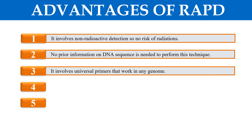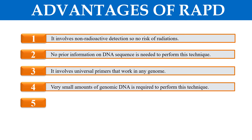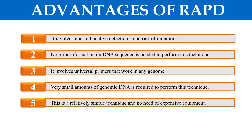Next, RAPD uses universal primers, so it can work with any genome because we do not have to design specific primers for a specific genome. Another advantage is that only a very small amount of genomic DNA is required, because we are using polymerase chain reaction which amplifies the DNA, so there is no need for a large amount of DNA sample. Finally, it is a very simple technique with no need for expensive equipment — it can generally be performed using a PCR machine or thermal cycler, making it a less costly technique. These are some of the advantages of the RAPD technique.